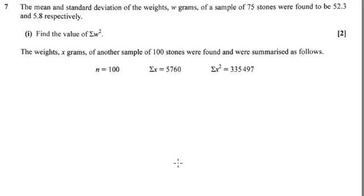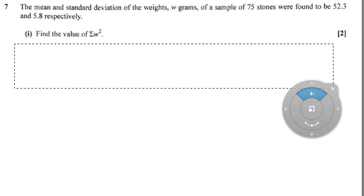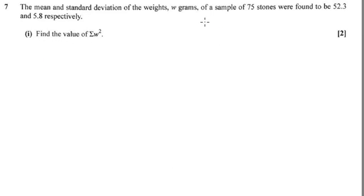It says that the mean and standard deviation of the weights of 75 stones, so n for part 1. Just get rid of this, this is for part 2, we don't need that yet. For part 1, n is 75.